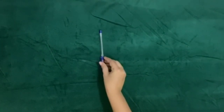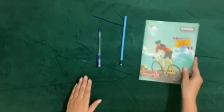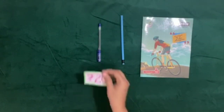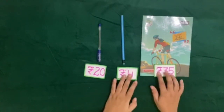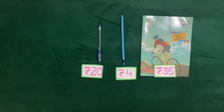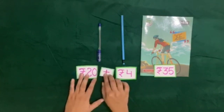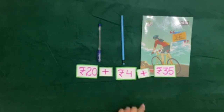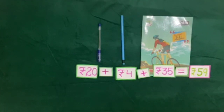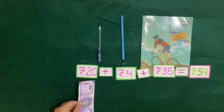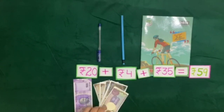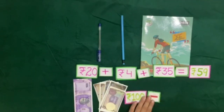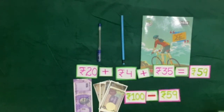Yesterday I went to market and bought a pen, pencil, and a notebook. The cost of the pen was rupees 20, pencil was rupees 4, and notebook was rupees 35. Let us find the total value of these 3 items: rupees 20 plus 4 is equal to 24, and 24 plus 35 is equal to 59. I had a note of rupees 100 which I gave to the shopkeeper — how much money will he return me after deducting rupees 59? Rupees 41, which means 100 minus 59 is equal to 41.